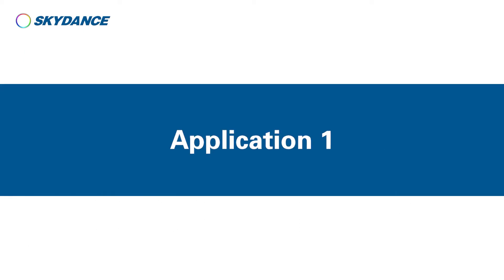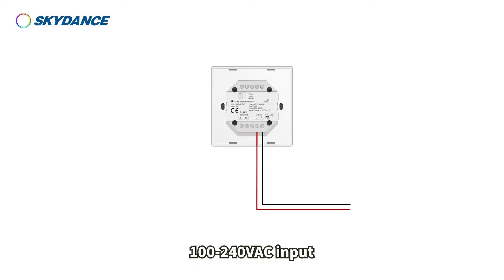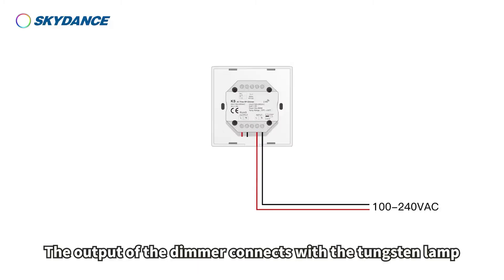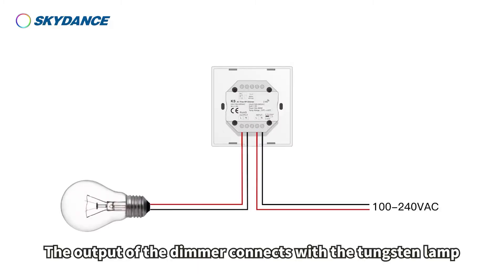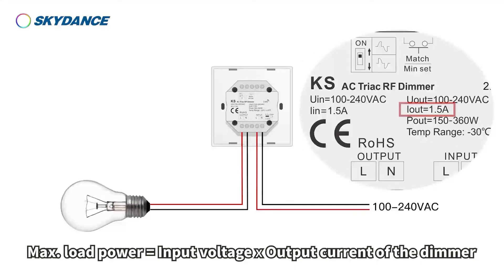Application 1: 100–240 volts AC input. The output of the dimmer connects with the tungsten lamp. Max load power equals input voltage multiplied by output current of the dimmer.